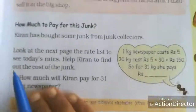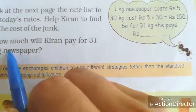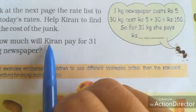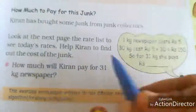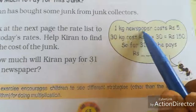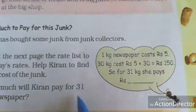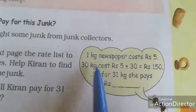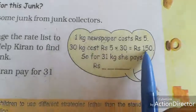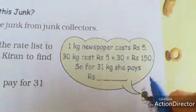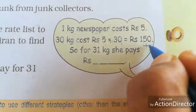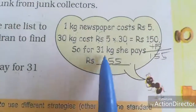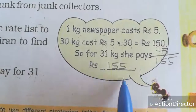Now, again look at this page. How much will Kiran pay for 31 kg newspaper? Already in the rate list, 1 kg of newspaper is rupees 5, and they ask for 31 kg. First, split: 30 kg cost is 5 into 30, that is 150. For 1 kg, add again 5. So totally, rupees 155. For 31 kg, she pays rupees 155.